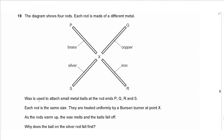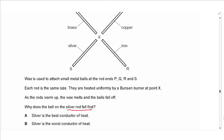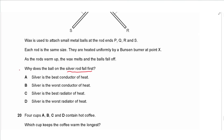Question 19 says: the diagram shows four rods, each made of a different metal. Wax attaches small metal balls at the ends. They are heated uniformly by a Bunsen burner at point X. Why does the ball on the silver rod fall first? Because conduction happens fastest in silver — silver is the best conductor of heat. That is the correct answer.